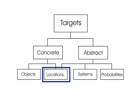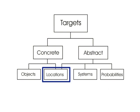Locations can be concrete or abstract. Concrete locations are places or things that do not move and are used as a reference point. Examples include the penalty area, near post, far post, the midfield line, corner flag, and so on.